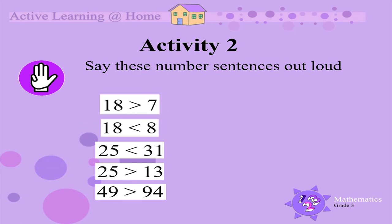Activity two: say these number sentences out loud. 18 is greater than 7. 18 is less than 8. 25 is less than 31. 25 is greater than 13, and 49 is greater than 94.